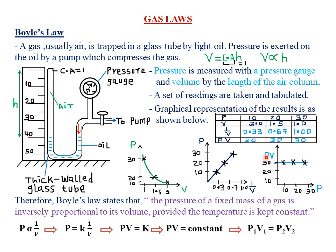We also plot a graph of PV against pressure. Multiplying: 10×3 = 30, 20×1.5 = 30, 30×1 = 30 — the product PV remains constant at 30 regardless of the variation in pressure. Plotting PV against pressure gives a straight horizontal line, showing that PV remains constant regardless of an increase or reduction in the pressure of the gas.